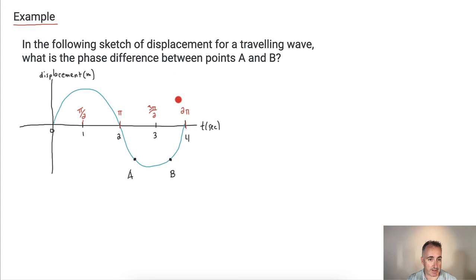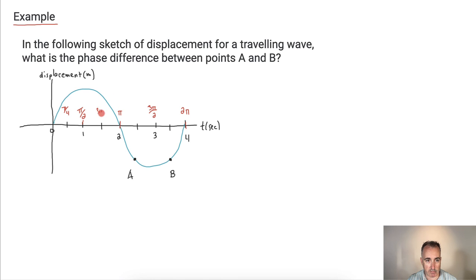I've got to try to figure out these distances, and I might even have to go further. I'm going to split these up into halves because A and B are at halfway marks in between. This thing right here is half of π over 2, which must be π over 4. Counting: 1π over 4, 2π over 4, 3π over 4, 4π over 4, 5π over 4 — that's an important one — 6π over 4, 7π over 4, and the last one is 8π over 4, which reduces to 2π.